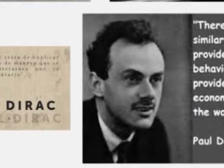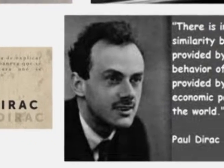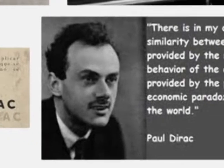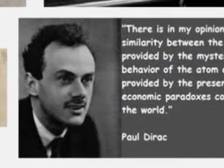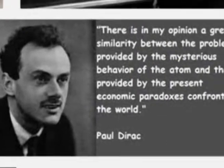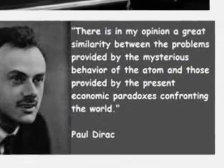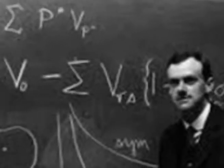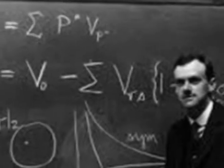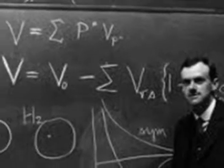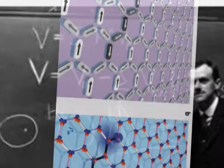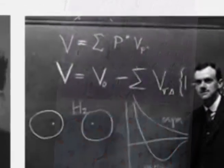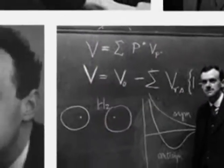Now, when a dimensionless number like that turns up, a physicist thinks there must be some reason for it — why it should be just 137 and not 256, or something quite different.